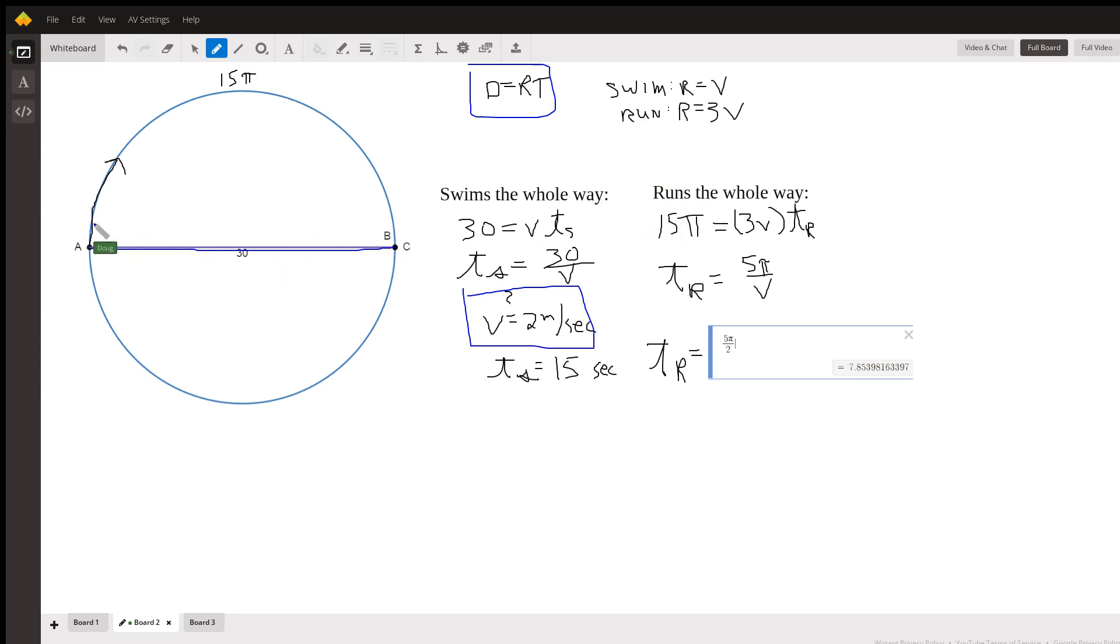If he runs the whole way, he's running 15π around that semi-circle at a rate of 3v, and so the time for him to run is going to be 5π divided by v. And 5π divided by 2, if we use the number 2 for his rate, is 7.8 seconds. So that's quite a bit faster, so it looks like maybe running the whole way is what's happening.